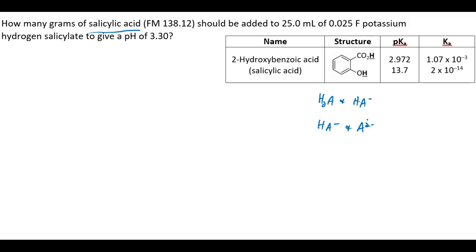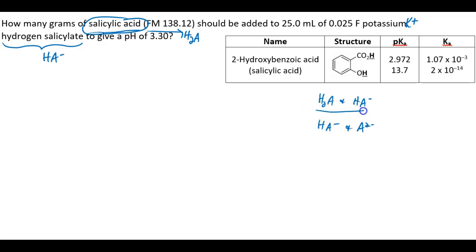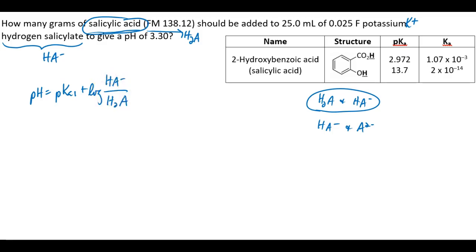Salicylic acid would be H2A, and potassium with a plus and the name hydrogen salicylate — that hydrogen is a clue that you've got HA minus. So it's this type of buffer, and the equation is going to be pH equals pKa1 plus the log of HA minus over H2A. The twist in this problem is that pH isn't the unknown — it's actually the moles of H2A that is the unknown. This problem is about preparing a buffer, but we don't have to write a neutralization reaction because we're not adding a strong acid or a strong base.